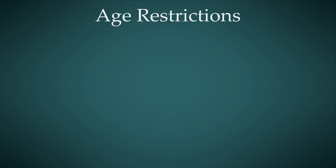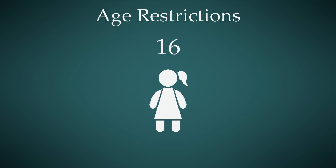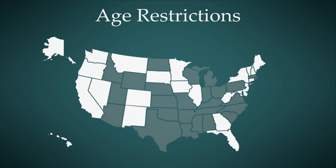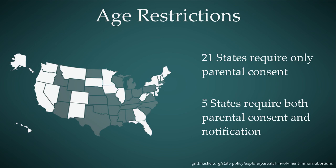The last thing we're going to talk about are the age restrictions when it comes to abortion. This was honestly really surprising to me — I didn't expect it to be quite this high — but if you are a 16-year-old and you want to get an abortion, in 24 states you do not need to have parental consent. So in roughly half of the United States your parents do not have to approve for you to get an abortion if you're 16, and in some cases younger.